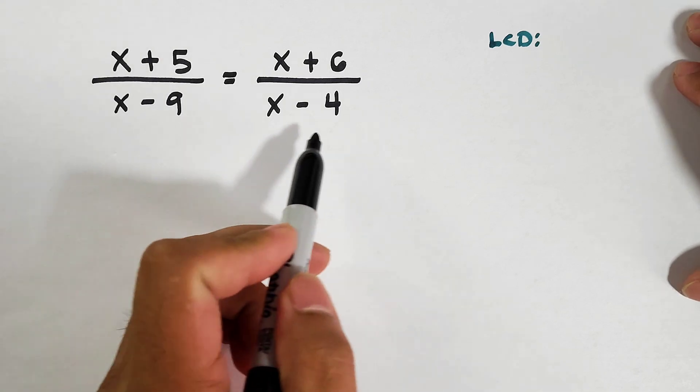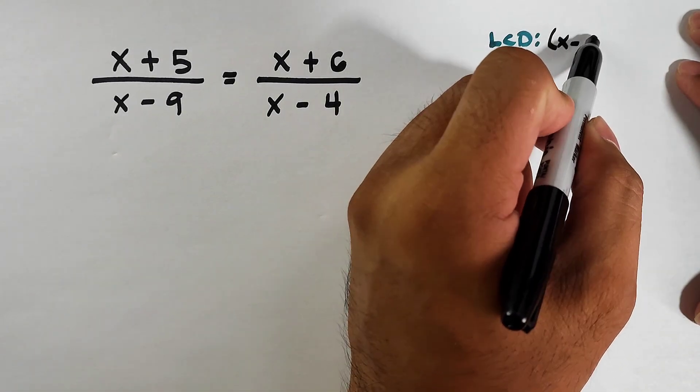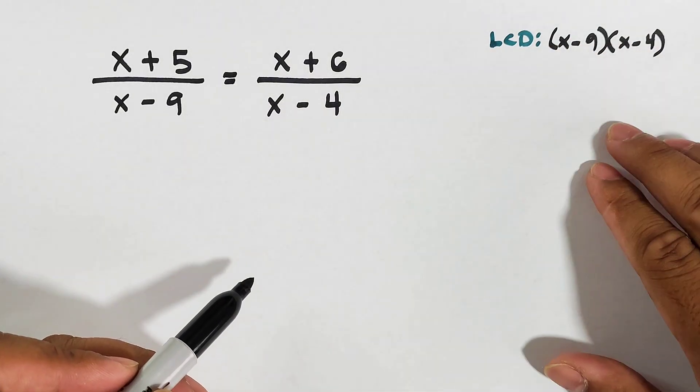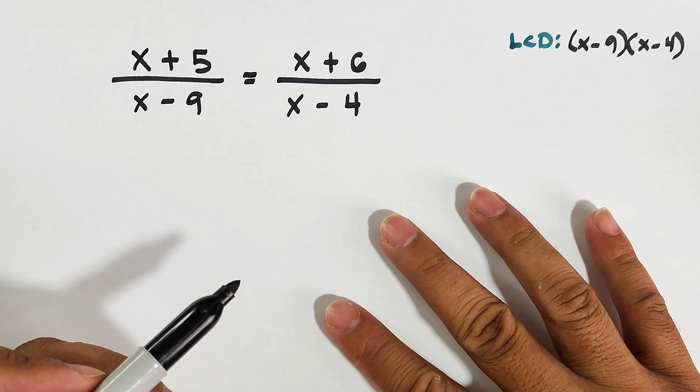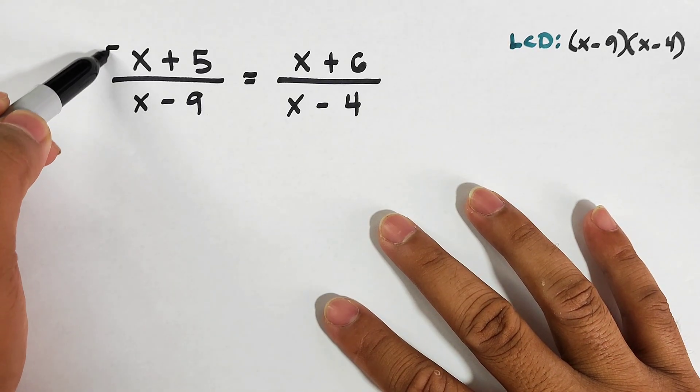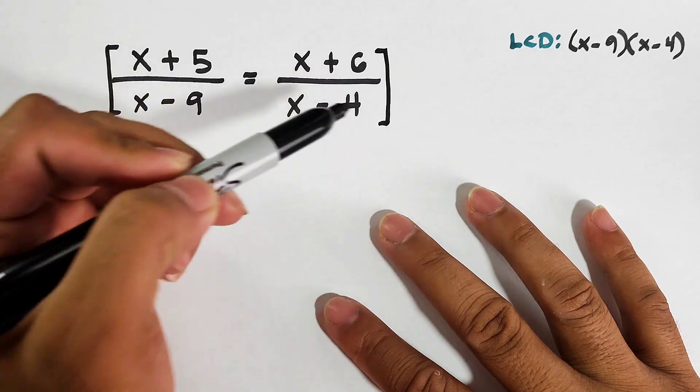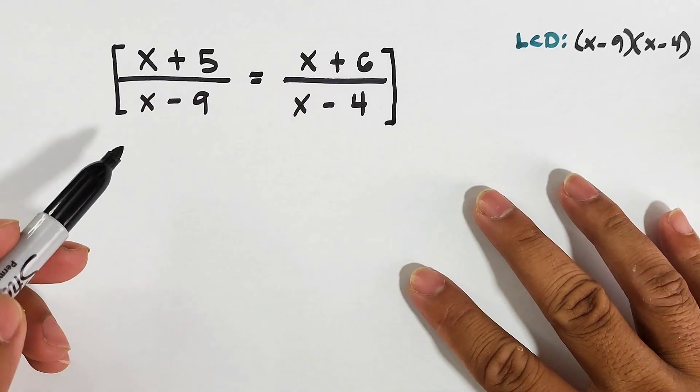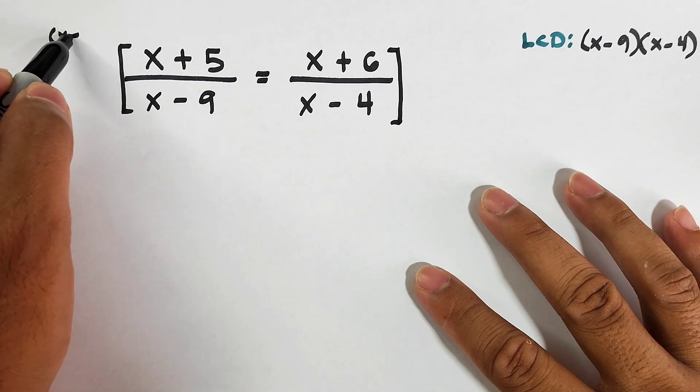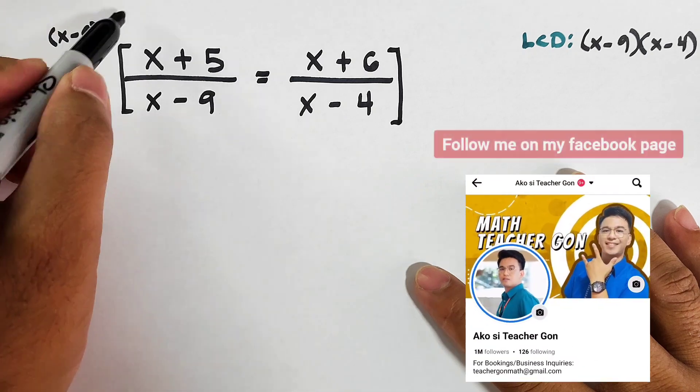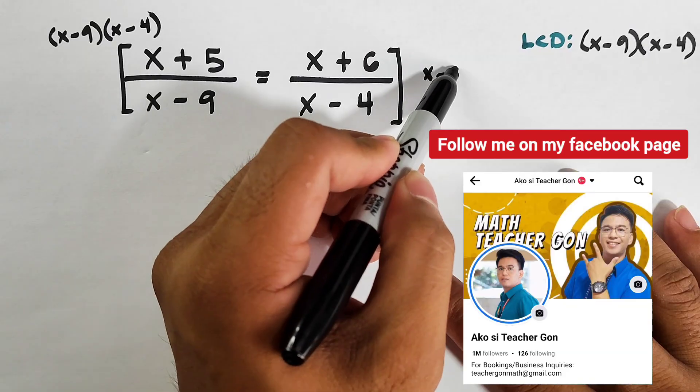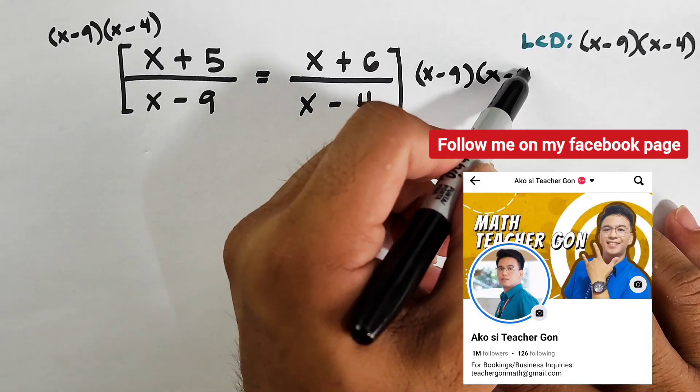Simply copy this one into factors: x minus 9 times x minus 4. This is your LCD for this problem. We will multiply this entire rational equation using our LCD. Let me show you how.